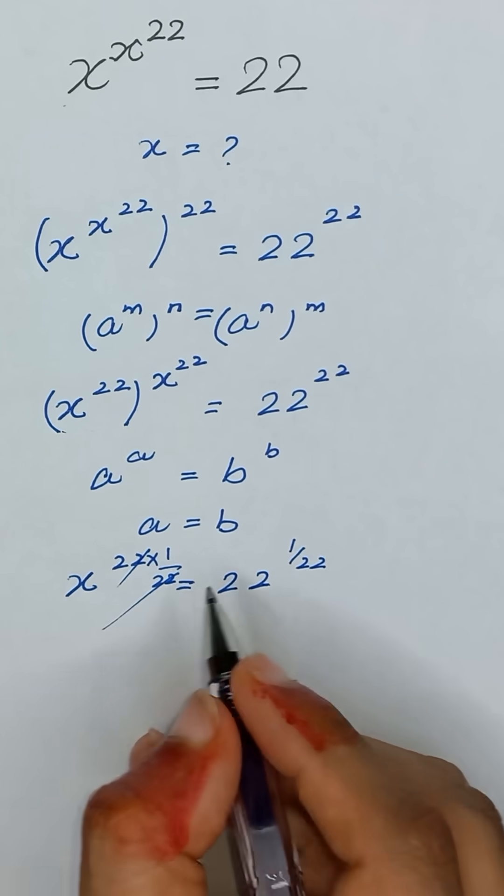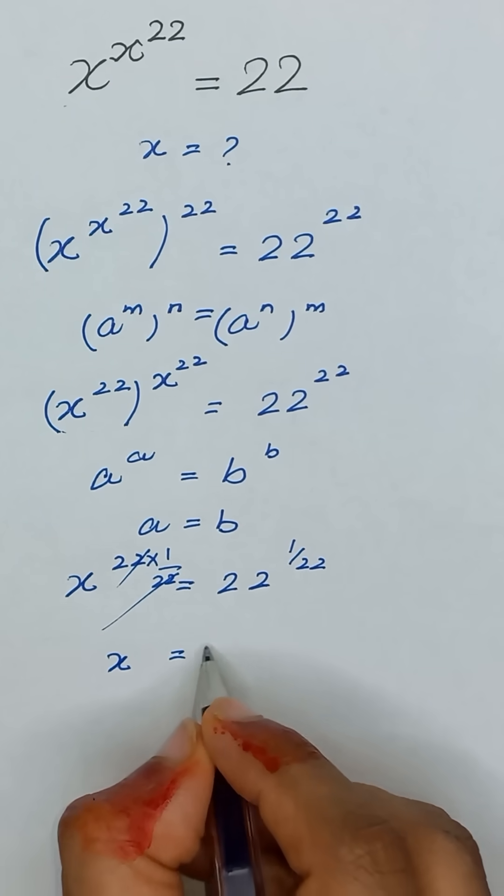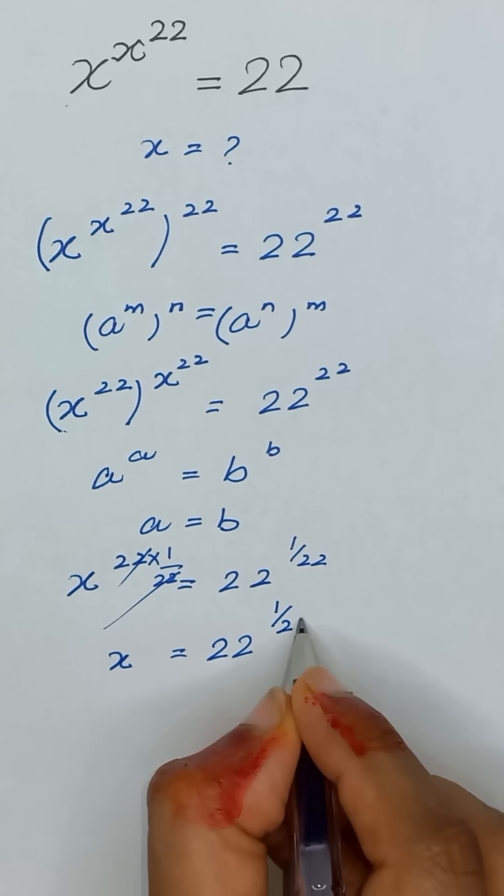So this 22 and 22 will be cancelled out and the value of x will be equal to 22 to the power 1 divided by 22.